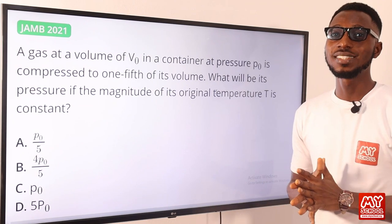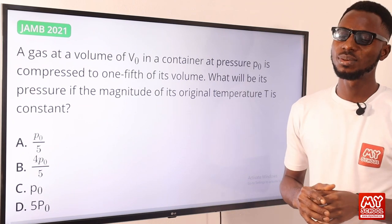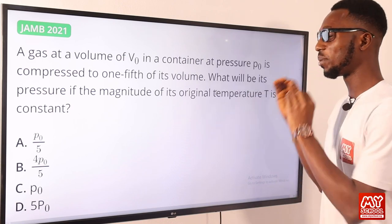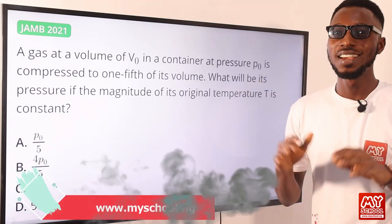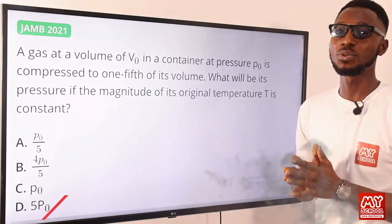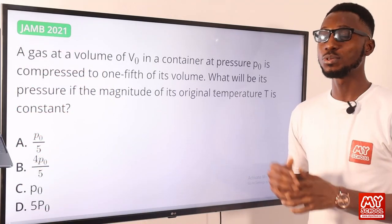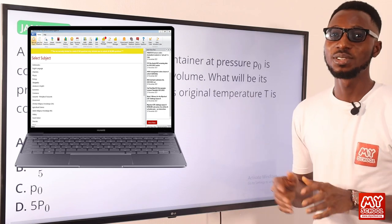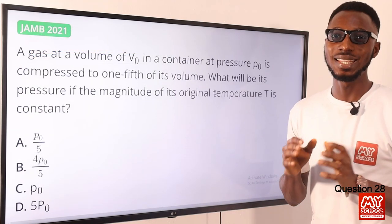That is why washing clothes with hot soapy water is faster and easier compared to cold soapless water — increasing temperature decreases surface tension. The correct option is option A.